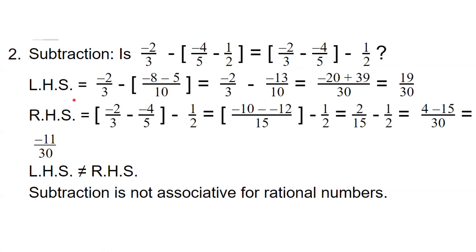LHS is equal to 2/3 minus, then in bracket we have two rational numbers with denominators 2 and 5, so LCM is 10. Simplifying: numerator minus 8 minus 5. So it is equal to 2/3 minus minus 13 upon 10. Again we have two rational numbers with different denominators. Simplifying with LCM, we get minus 20 plus 39 upon 30, equal to 19 upon 30.